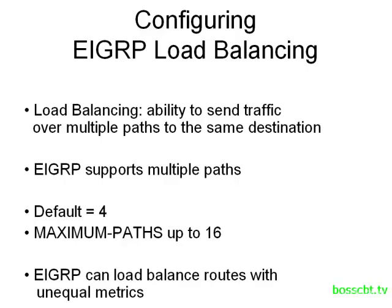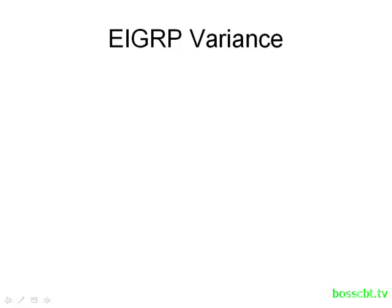With EIGRP we've got some leeway, and if we have two routes that are similar in their metrics, then we can configure EIGRP to balance between them. That's what we're going to focus on in this tutorial. In order for this to work, we have to tell the router what metric is acceptable — how close do the metrics have to be in order for the router to load balance between them? This brings us to the idea of variance.